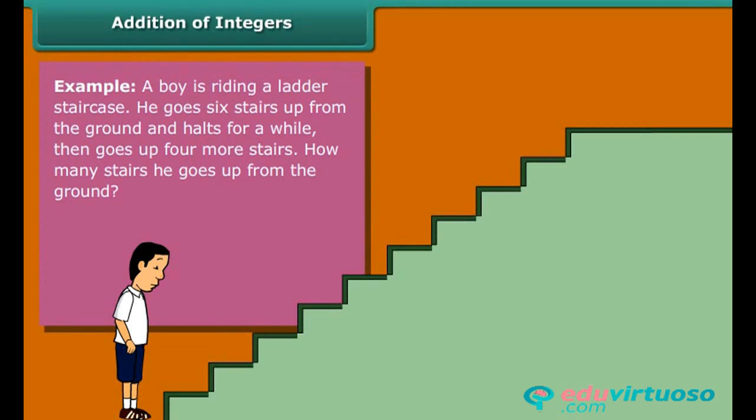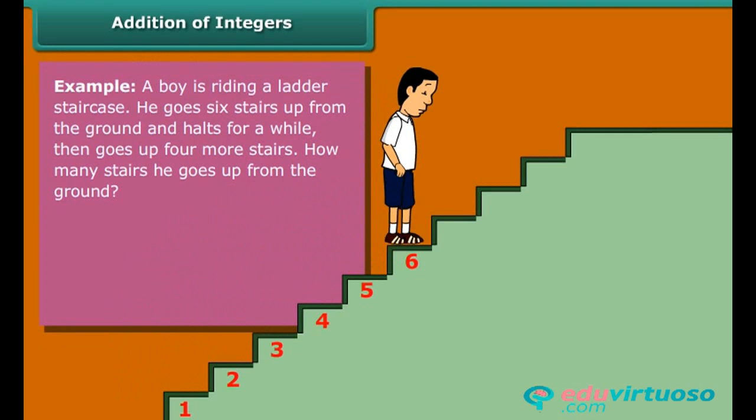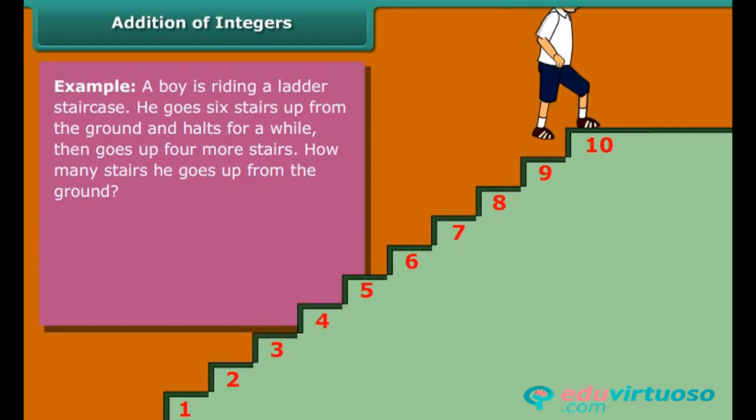Example: A boy is riding a ladder staircase. He goes 6 stairs up from the ground and holds for a while, then goes up 4 more stairs. How many stairs does he go up from the ground? Plus 6 plus plus 4 is equal to plus 6 plus 4, which equals plus 10.